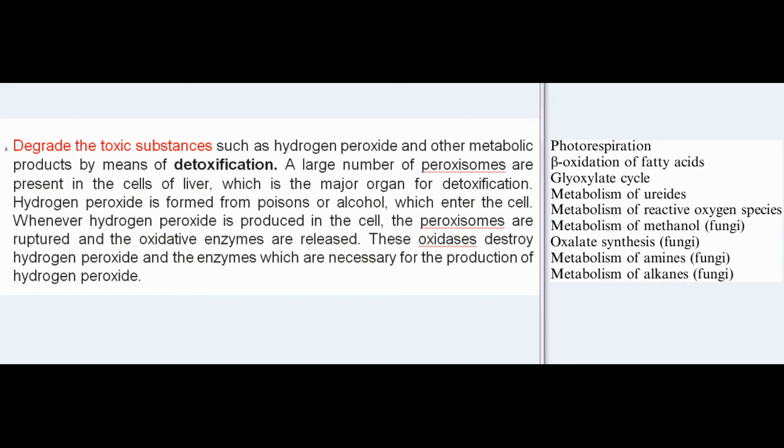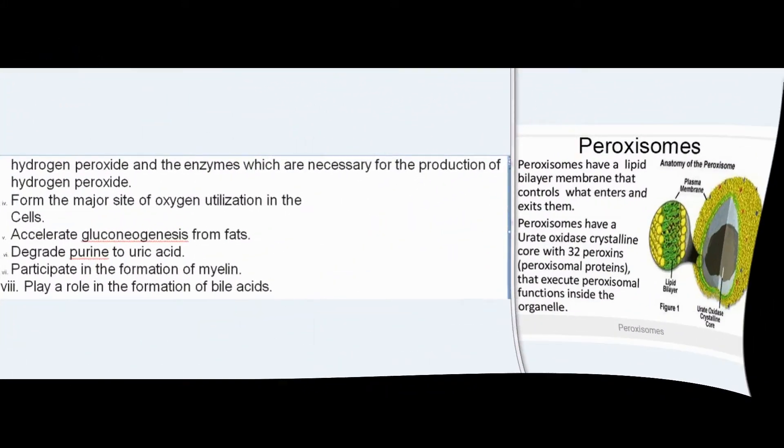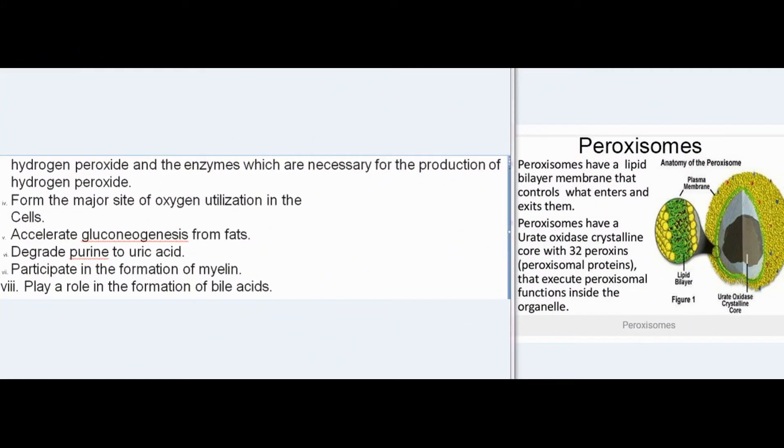Hydrogen peroxide is formed from poisons or alcohol that enter the cell. When hydrogen peroxide is produced, peroxisomes rupture and release oxidative enzymes that destroy the hydrogen peroxide and the enzymes necessary for its production. Peroxisomes also form the major site of oxygen utilization in cells, accelerate gluconeogenesis from fats, degrade purine to uric acid, participate in formation of myelin, and play a role in formation of bile acids.